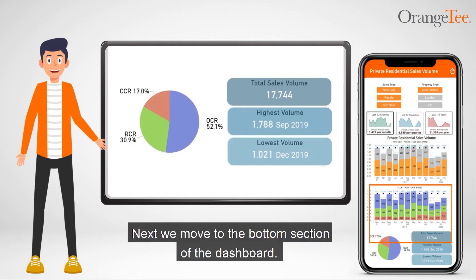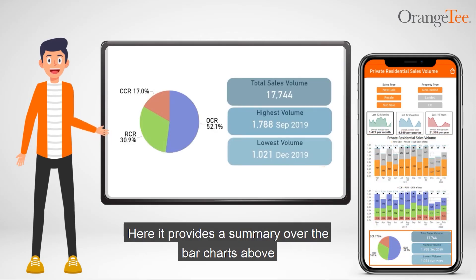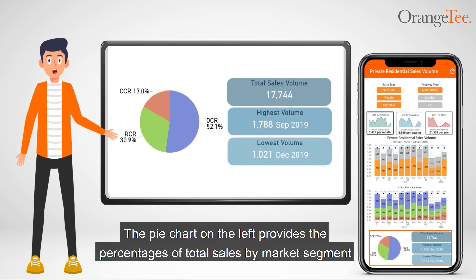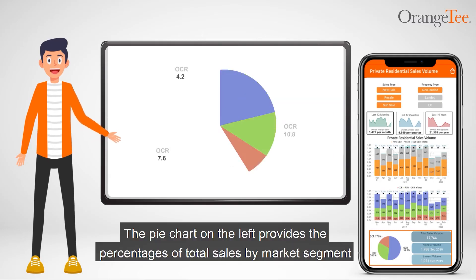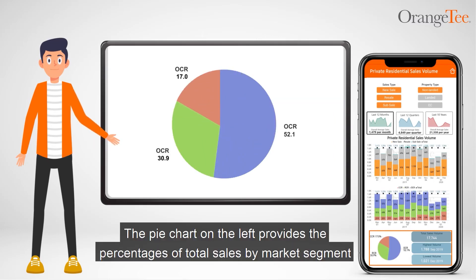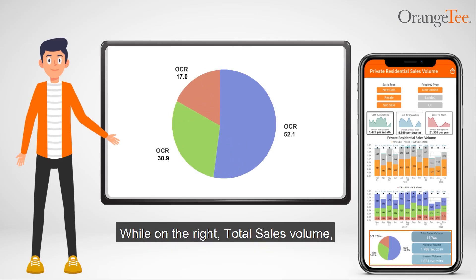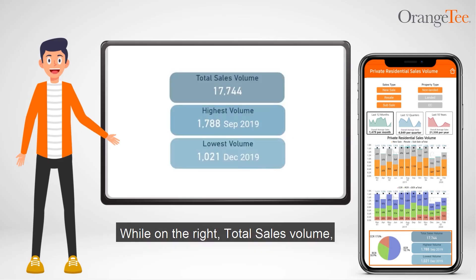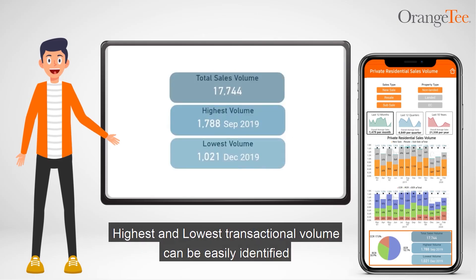Next we move to the bottom section of the dashboard. Here it provides a summary over the bar charts above. The pie chart on the left provides the percentages of total sales by market segment. While on the right, total sales volume, highest and lowest transactional volume can be easily identified.